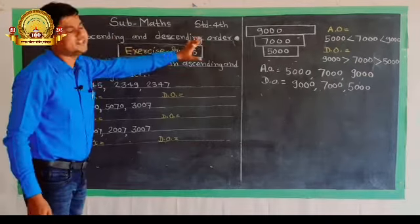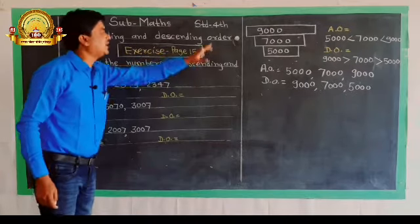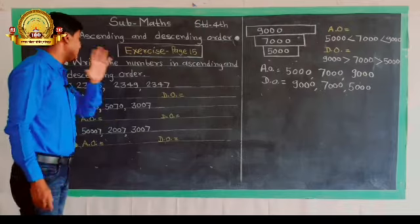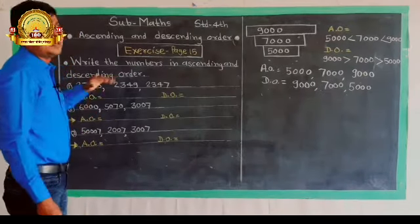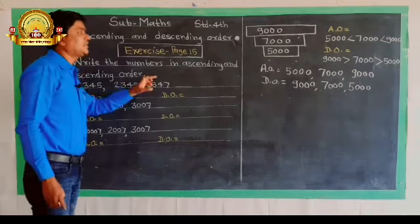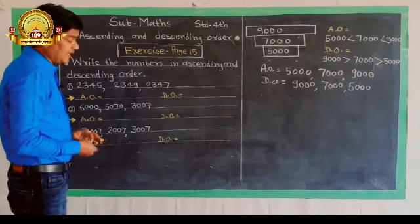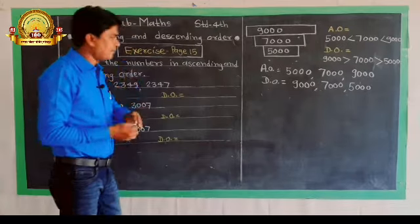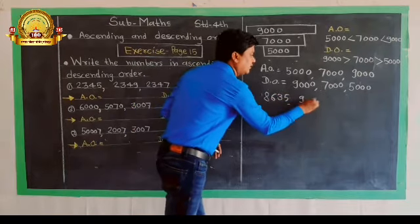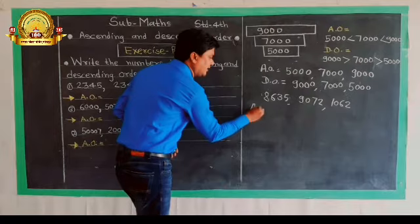Subject: Mathematics — ascending and descending order. Exercise, page number 15. There are 6 examples in all, but I have taken only 3 examples as specimens. The instruction is: write the numbers in ascending and descending order. The numbers given are 8,635, 9,072, and 1,062.